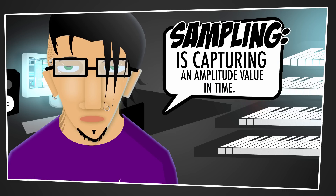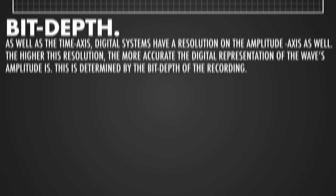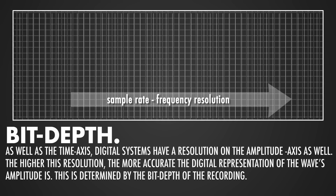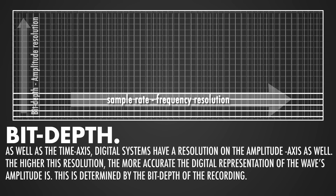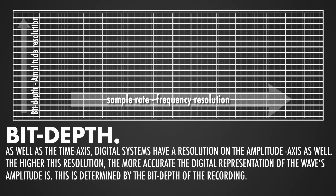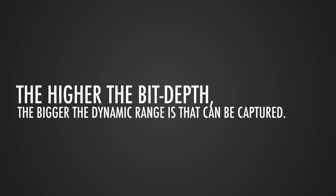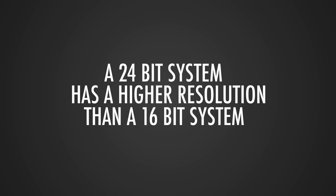Sampling is capturing an amplitude value in time. This value is captured in a process called quantization. Just as with the time axis, digital systems have a certain resolution on the amplitude axis. The higher this resolution, the more accurate the digital representation of the waveform's amplitudes. This is determined by the bit depth of the recording. The higher the bit depth, the more dynamic range can be captured — so a 24-bit system has a higher resolution than a 16-bit system.